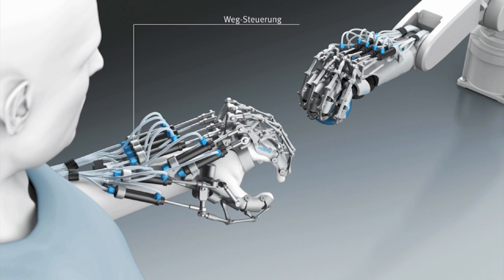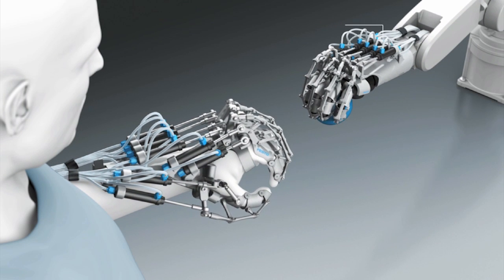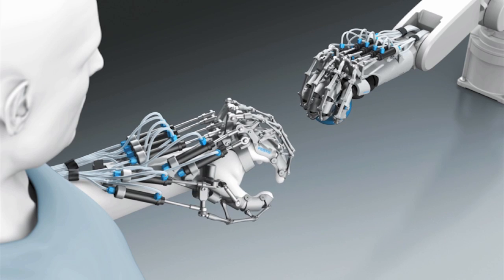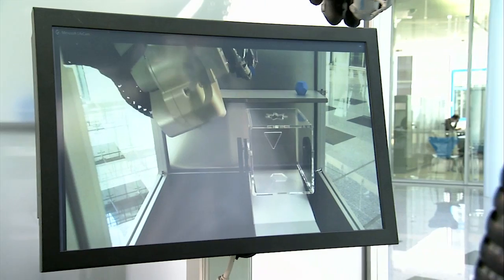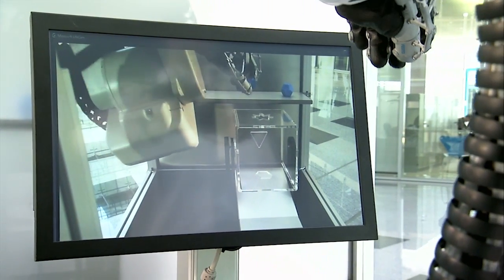When an object is grasped or sensed by the artificial hand, the resulting forces are fed back to the hand of the human operator, who can then feel what the robot is holding and can even perform highly sensitive operations.